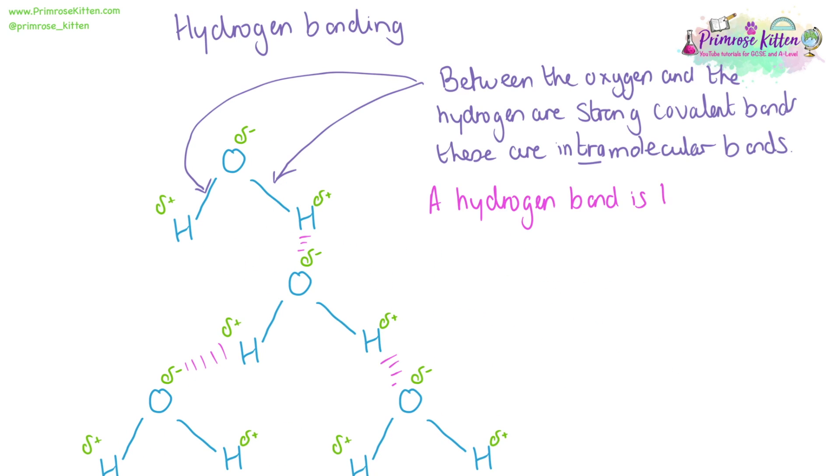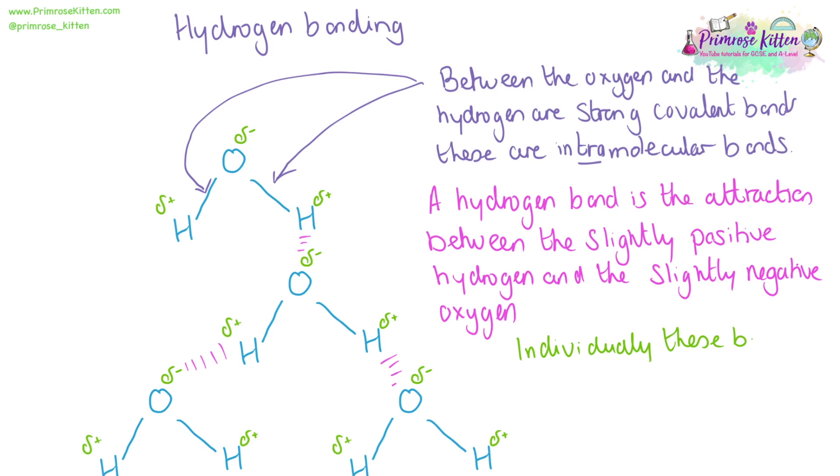A hydrogen bond is the attraction between the partial negative charge and the partial positive charge. Individually, these hydrogen bonds are weak. They are not very strong. But there are generally a large number of hydrogen bonds wherever you will come across them. And their combined overall strength is very large. These are intermolecular bonds. And individually, they will be weak.